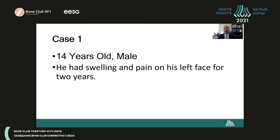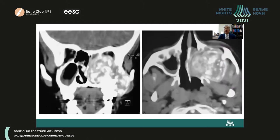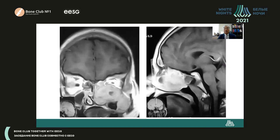This is a 14-year-old male who had swelling and pain on his left face for two years. He underwent radiological exams. CT coronal and axial images show a soft tissue mass in the left maxillary sinus with multiple calcifications. The lateral wall of the sinus is destroyed with extension of the soft tissue mass. Gadolinium-enhanced coronal and sagittal MR images show diffuse enhancement with focal non-enhanced areas.